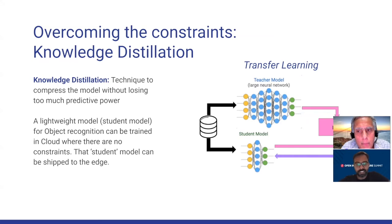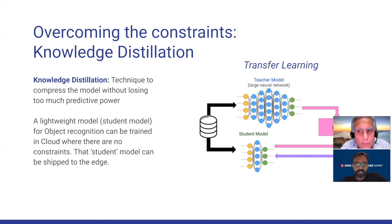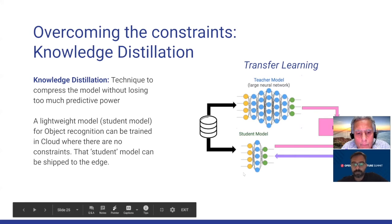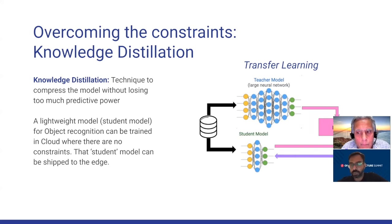As we go closer to the edge, we're constrained on compute power and have a high requirement for low latency. In machine learning, there's a technique called knowledge distillation, which creates a lightweight version of a model for low-latency use cases. You have an accurate deep neural network treated as a teacher, and a shallow student network that learns by mimicking the teacher. The result is a lightweight model that can be transported easily and inferences much quicker than the full model, with only a slight trade-off in accuracy.